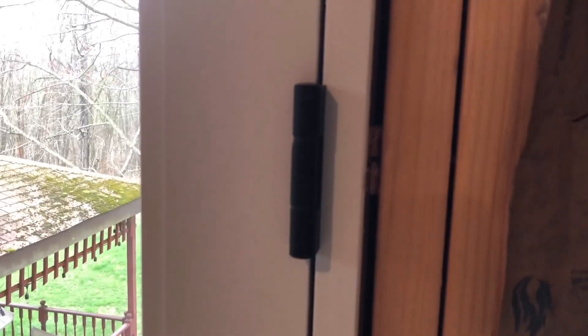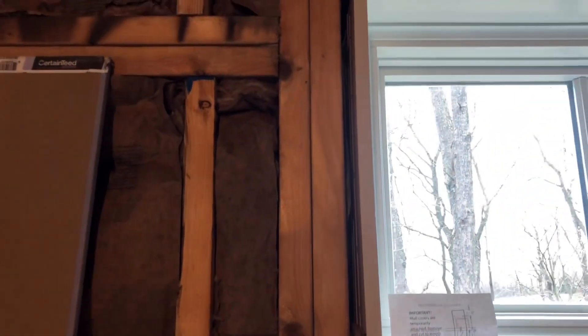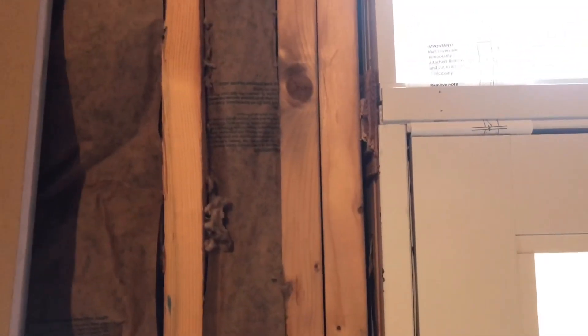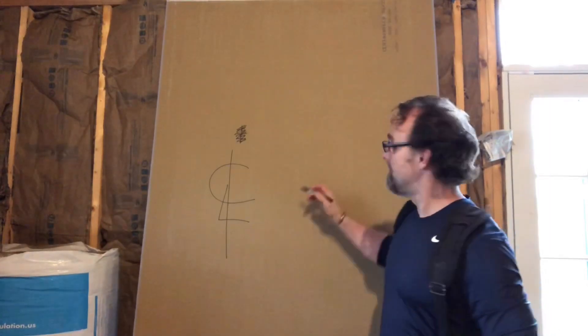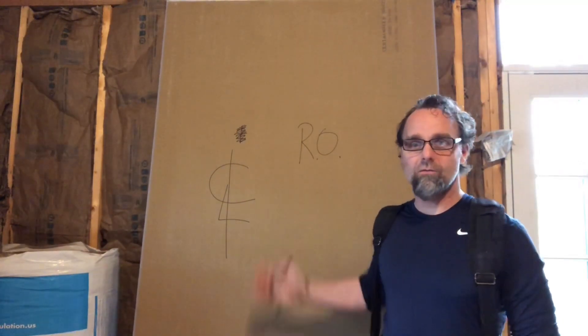There's a gap at the top as well — not only on windows but doors too. That gap is filled with shims. Windows and doors are sized to work in an opening that is slightly bigger than the unit, and we use shims to close that gap. 'RO' is the abbreviation for rough opening.